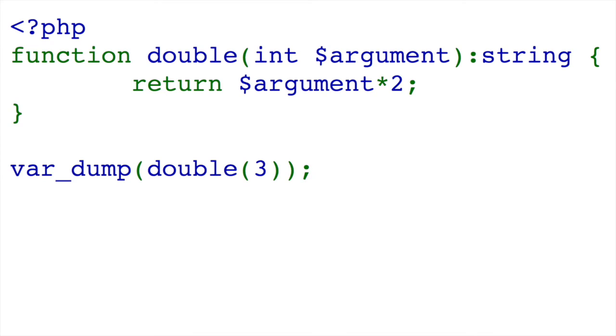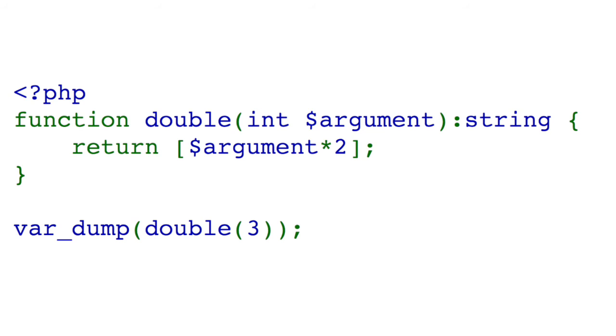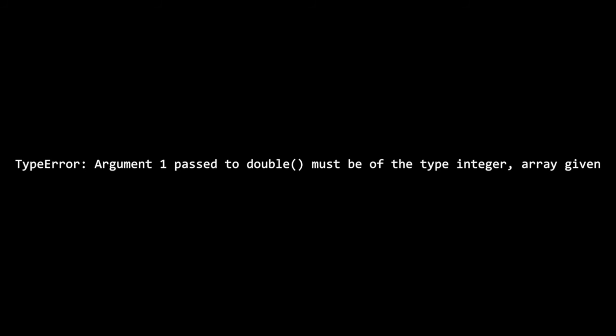The same deal applies with return types. PHP will always try to coerce the output value into the desired one. If you want a string as output, PHP will automatically turn that into a string even if you're returning an integer. When there's a mismatch that cannot be coerced into the desired type, a type error is thrown.